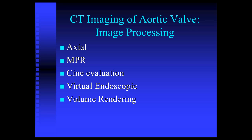Imaging processing is very important in imaging of the aortic valve. Standard axial images are important, but MPR views and oblique MPRs are very important in CT imaging. Cine evaluation can be very helpful in evaluation of function and dysfunction of the aortic valve. Anoscopic views are helpful to surgeons. Mostly MPR and cine imaging are the mainstay of imaging of the aortic valve.